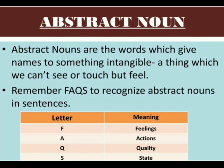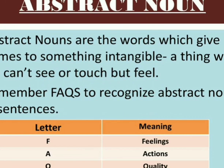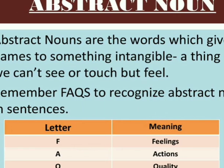Now let's move on to abstract noun. Abstract nouns are words which give names to something intangible — intangible means a thing which we cannot touch but can only feel. To find out abstract nouns, we should remember FAQS: F stands for feelings, A stands for actions, Q stands for quality, and S stands for state. These help us to recognize abstract nouns in a given sentence.